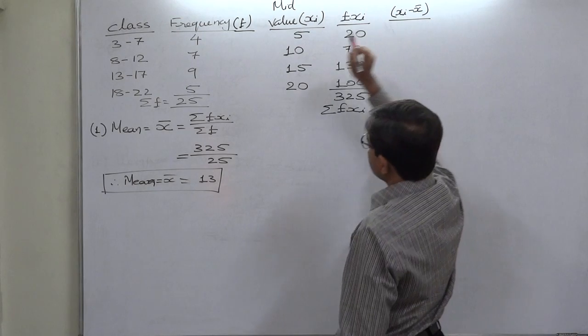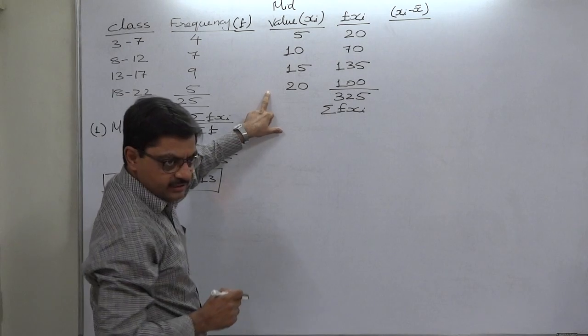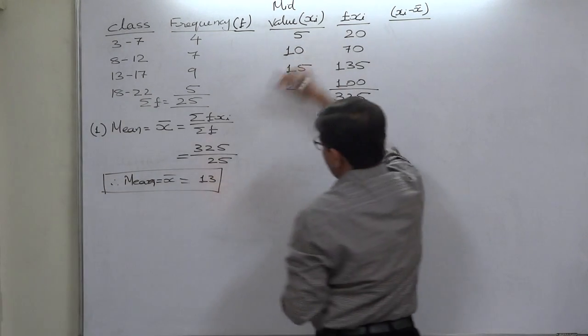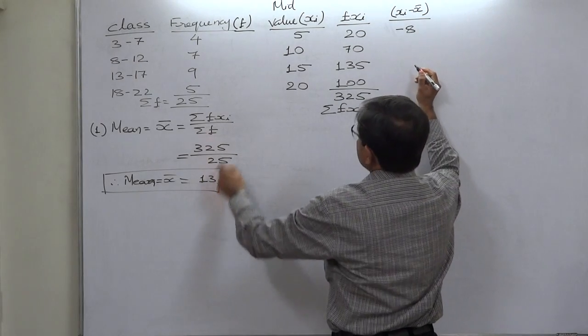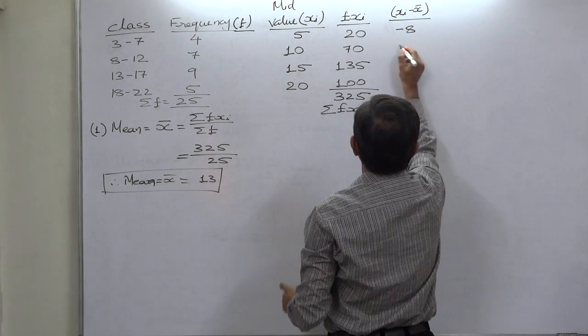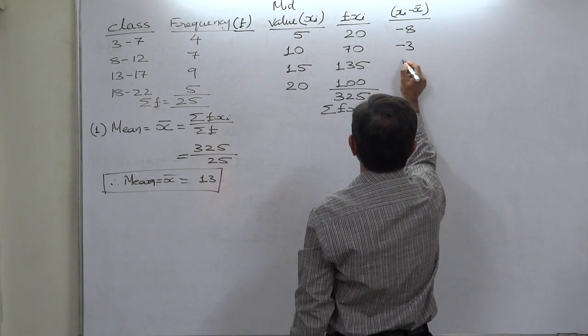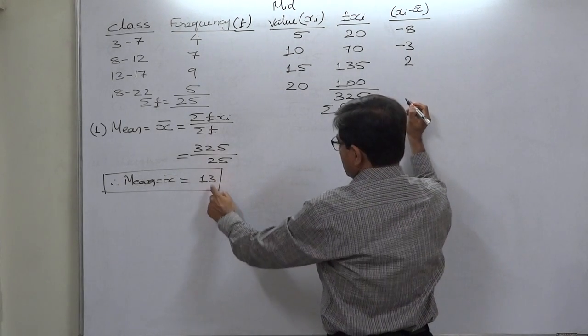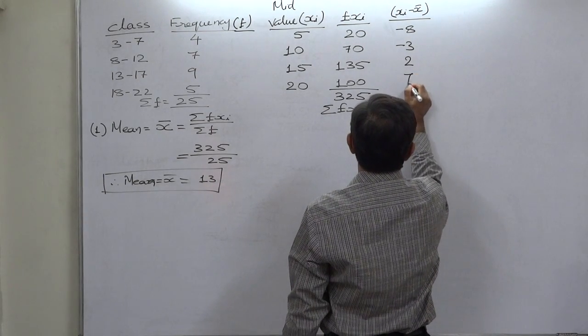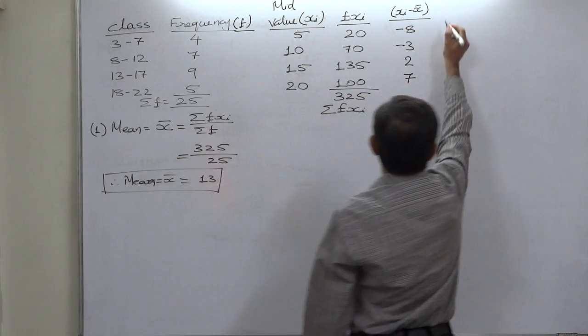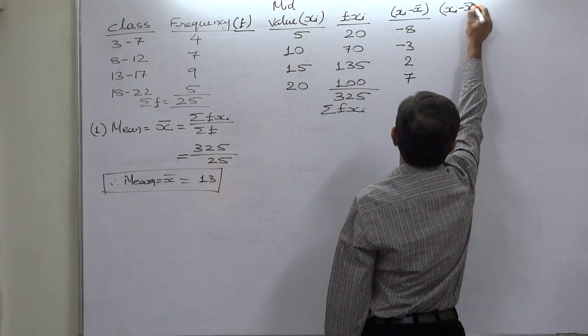Next is x minus x bar. That means we have to subtract 13 from all values of x or midpoints. 5 minus 13 is minus 8, 10 minus 13 is minus 3, 15 minus 13 is positive 2, and 20 minus 13 is positive 7.